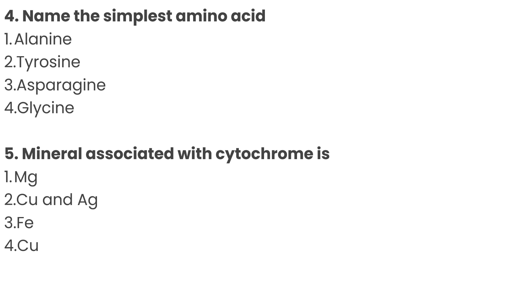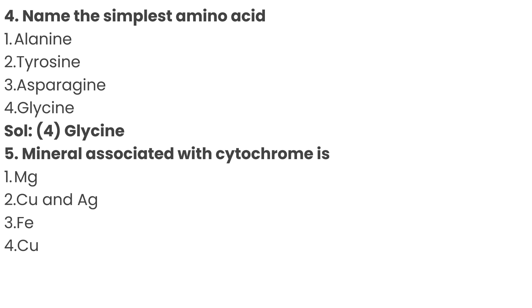Question number 4: name the simplest amino acid. Option 3: Asparagine, Option 4: Glycine. The correct answer is Option 4: Glycine is the simplest amino acid.